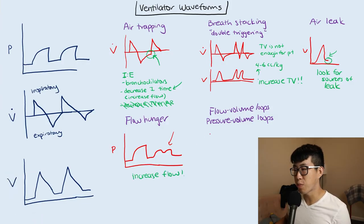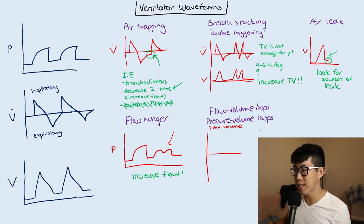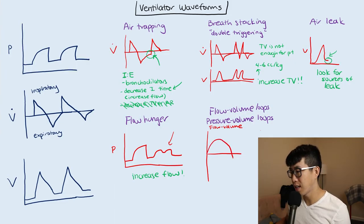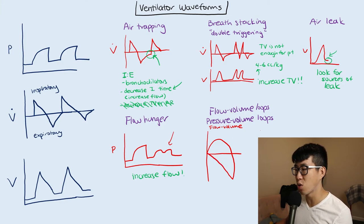Let's talk briefly about flow volume loops and pressure volume loops. For a flow volume loop, above the X axis is going to be your inspiratory limb and then you're going to have an expiratory limb — and it should look something like this. That's going to be a normal flow volume loop.